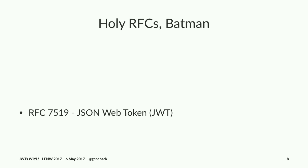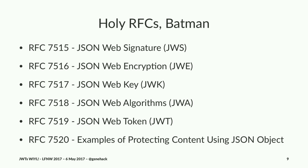As you read through 7519, first you'll become confused, and then eventually you'll become enlightened, because you'll realize it's not just 7519 that you need to know about. There's also 7515, 16, 17, 18, and my personal favorite, RFC 7520 — examples of protecting content using JSON object encryption, signing and encryption, or JOSE.